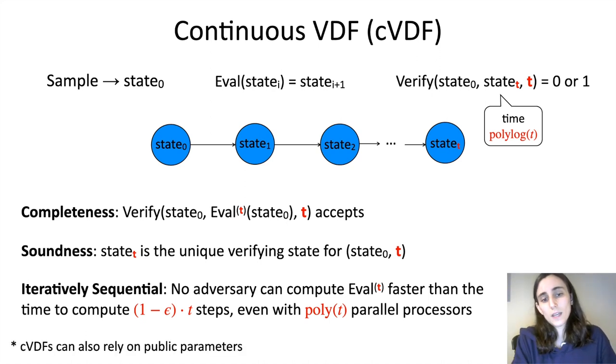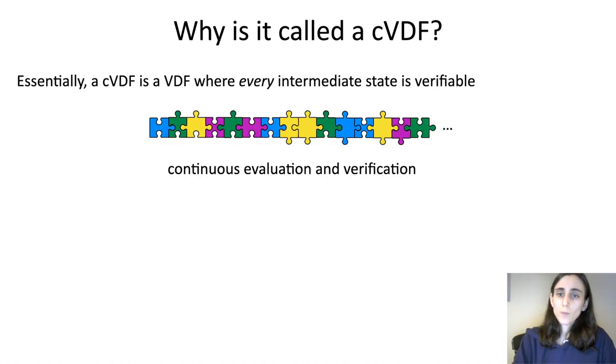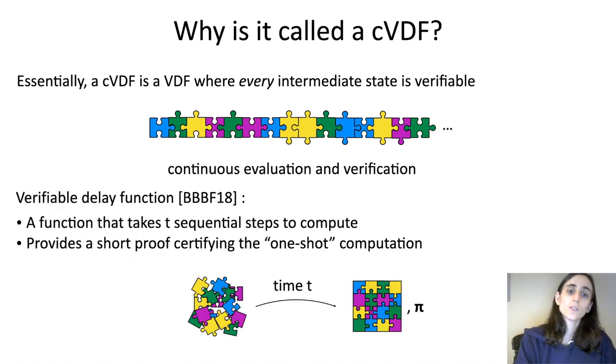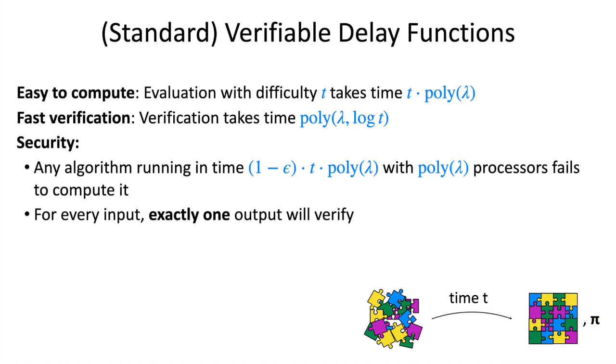I'll also mention that continuous VDFs can rely on public parameters, just as in the case of VDFs. The reason we call this a continuous VDF is essentially because it's a verifiable delay function where every intermediate state is verifiable. A verifiable delay function, in contrast, this was introduced by Boneh et al. in 2018, and this is also a function that takes t sequential steps to compute, so it also requires a high sequential time, but it only provides verifiability at the end of the computation.